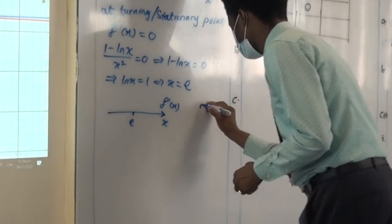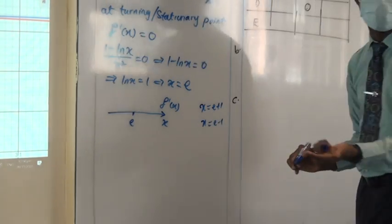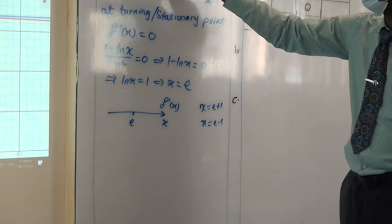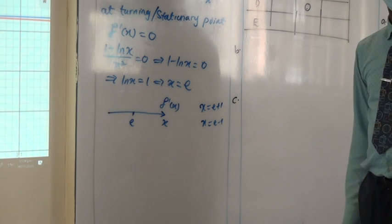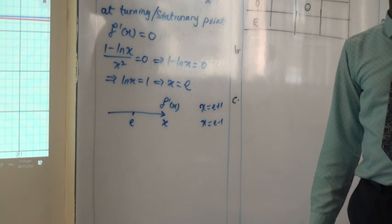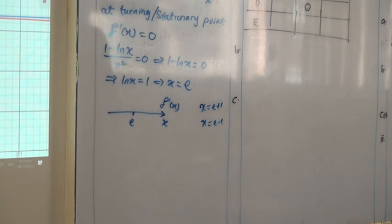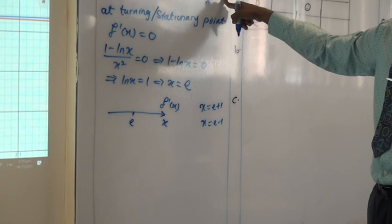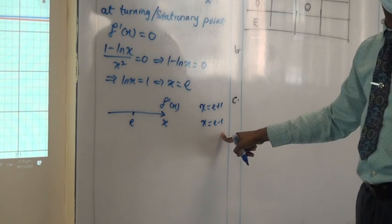Check when x is equal to e plus 1 — that's after e. And check when x is equal to e minus 1 — that's before e. Put x equal to e plus 1 into the gradient. We want to know if the gradient is positive or negative — not in f(x). After e is negative.